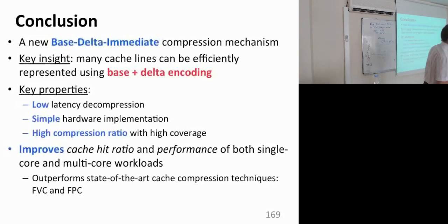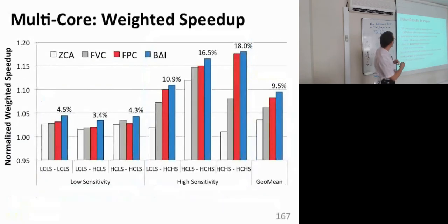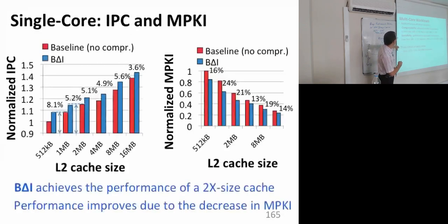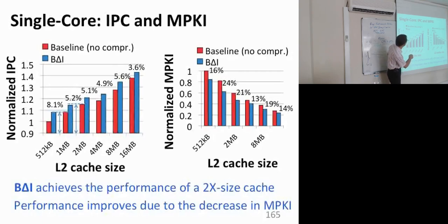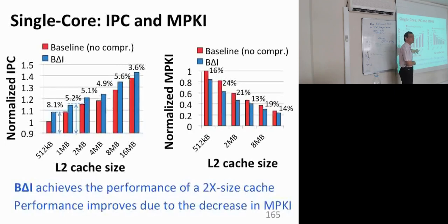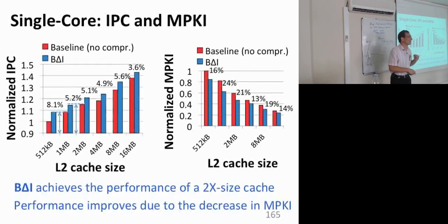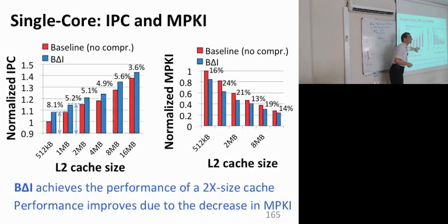Is it cheaper to just add more cache than to do compression? A 1-megabyte cache with Base-Delta-Immediate compression provides the performance of a 2-megabyte cache. So the trade-off is: do you add one more megabyte, or add 2.3% additional overhead with some complexity? A 2-megabyte cache with compression provides better performance than a 4-megabyte cache without. Also, simply increasing the cache size increases read latency because it's a bigger structure. So compression is a better trade-off than simply increasing cache size.